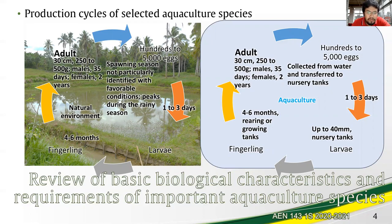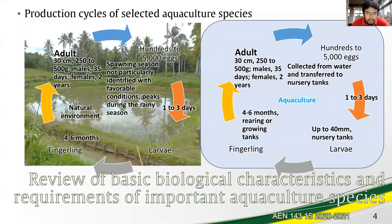During spawning, the male fertilizes the eggs of the female — up to 500,000 eggs. In culture, eggs that float to the surface are harvested and moved to nursery tanks, where they grow into larvae up to 40 millimeters. Fertilization in this species happens outside the body. The larvae are then transferred to grow-out tanks for the fingerling stage and harvested in four to six months.